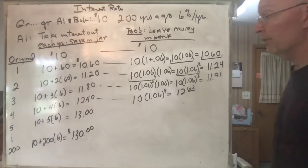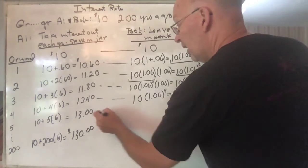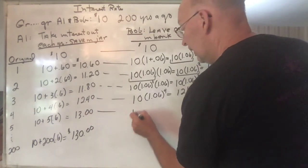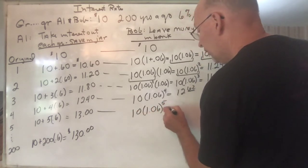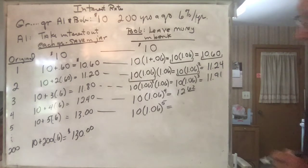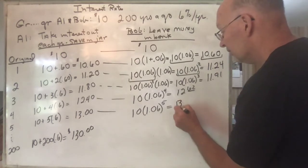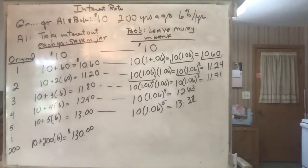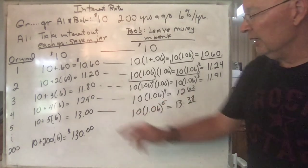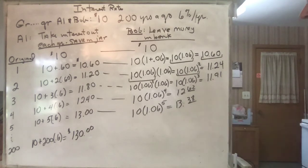Okay, so you have almost a quarter more. At the end of the fifth year, you're going to have 10 times 1.06 to the fifth power, which is equal to—I'm sorry—$13.38. Okay, so now you're 38 cents more than you were here.